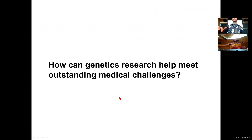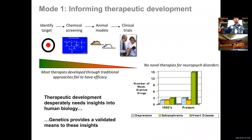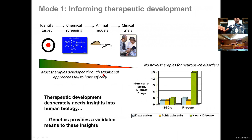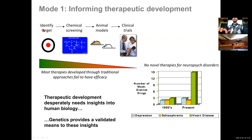The basic goal we're starting with is: how can genetic research help meet outstanding medical challenges? Most therapies have been developed through traditional approaches and they fail to have efficacy. The traditional pipeline is: identify a target, do genetic screening, develop animal models, and go into clinical trials. What we've found is that a lot of drugs are failing at the very end of this process because they're not starting from the best targets.